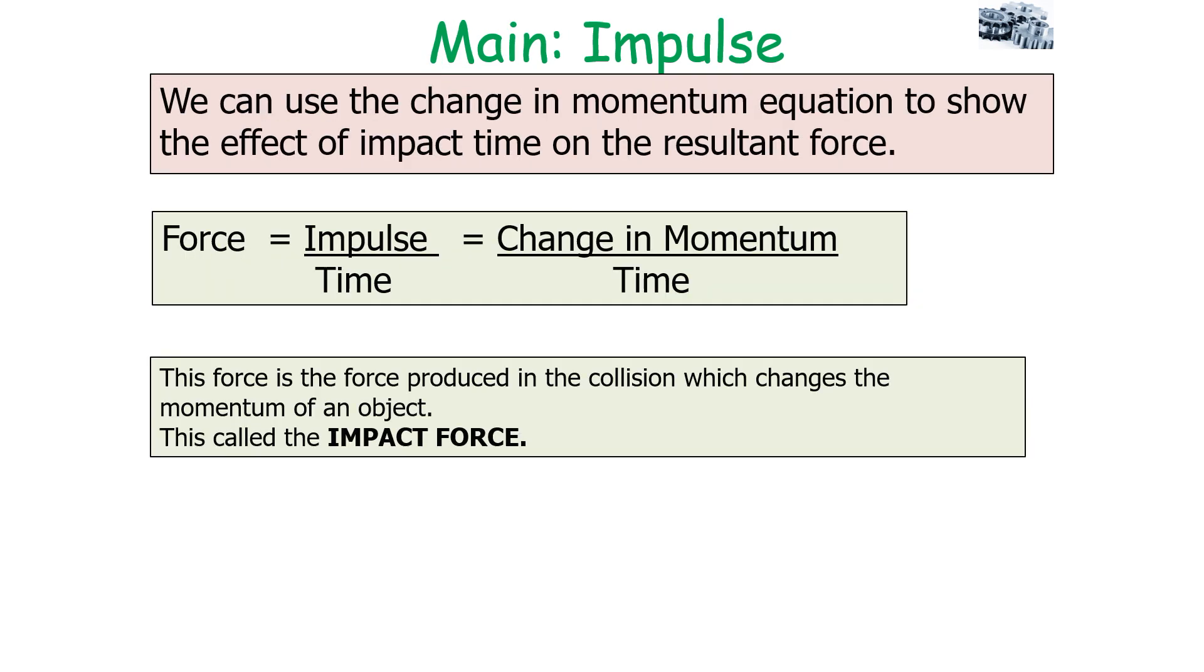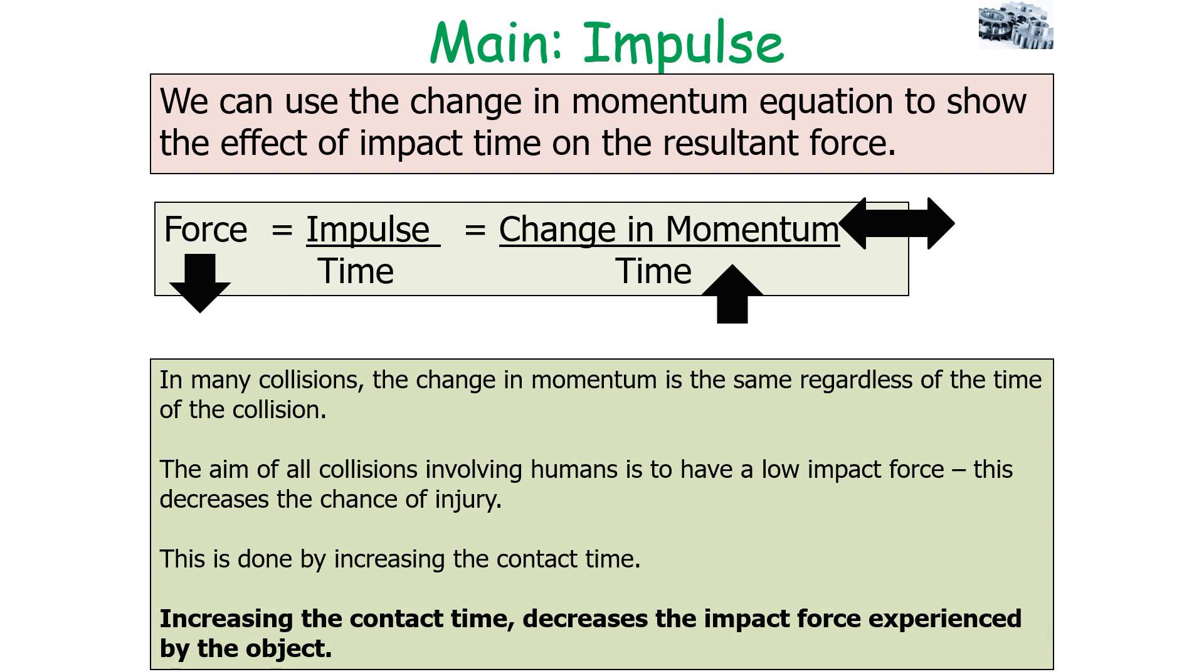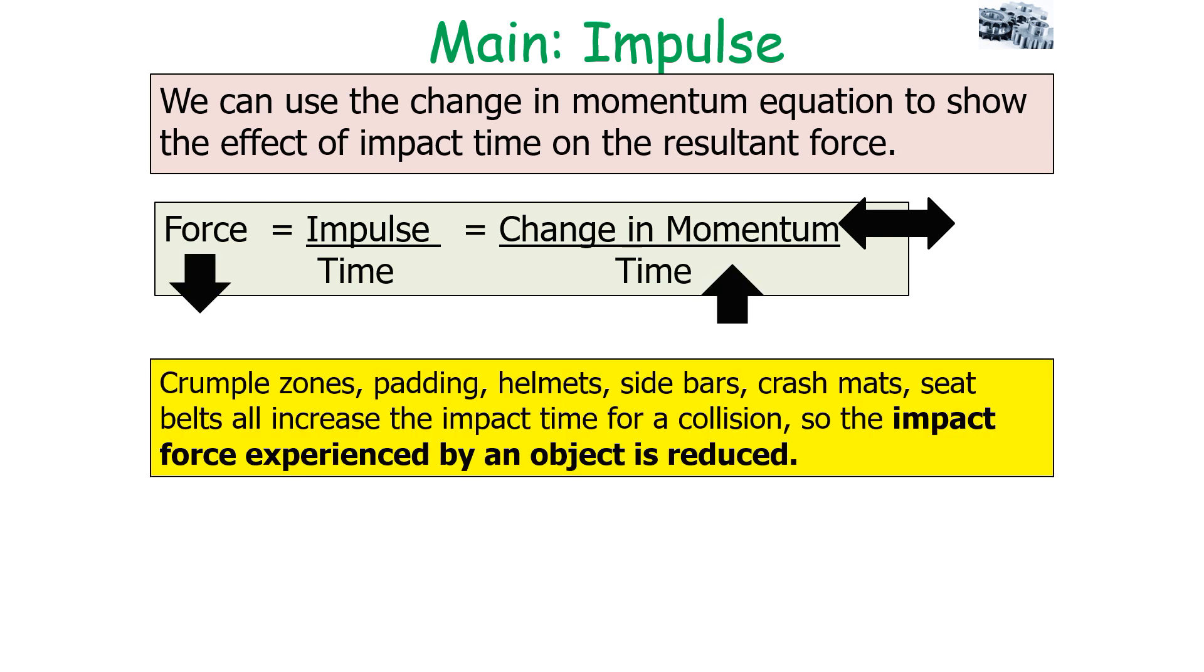If we look at our equation that force is equal to impulse over time, or the change in momentum over time, we can then look at how this works. So what we can say is that whilst the total momentum of the system of the object stays constant, the momentum of one object can change. So what we can see from this equation is that by increasing the contact time, it decreases the impact force experienced by the object. If we decrease the contact time, this increases the impact force experienced by the object.